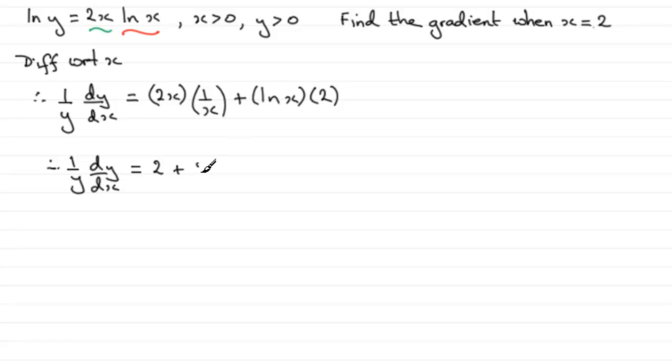And here I'm going to put the 2 in the front of the natural log of x, so we've got 2 natural log of x. And now if we multiply both sides by y, we end up with therefore dy by dx equals, we could put out 2 as well actually, so we've got 2y multiplied by 1 plus the natural log of x.